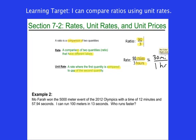So let's take a look at the second example down here. I have here Mo Farah, who's from Great Britain. He won the 5,000 meter event in the 2012 Olympics. He ran in 12 minutes, 57.94 seconds.